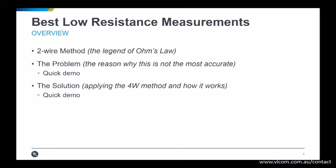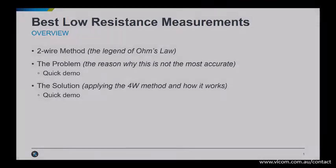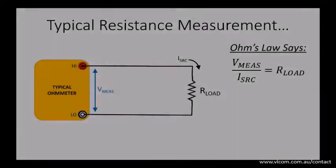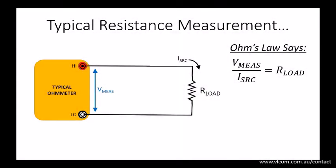The resistance function of your typical ohmmeter or multimeter will source a known current to your device under test, the resistor, and perform a voltage measurement at the terminals where the test leads are inserted. The resistance value is calculated using the source current and measured voltage values.